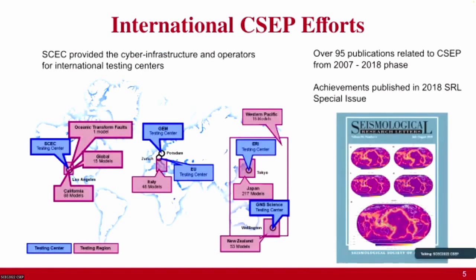After REALM, the project was a great success and it spurred a lot of international CSEP developments, starting from a single testing center in California. Towards the end of the first phase of CSEP, there were over 450 models installed in testing centers internationally, which is quite impressive, and they comprised a ton of different testing regions. These efforts resulted in almost 100 publications over the first decade of CSEP, and a lot of these achievements were outlined in the 2018 SRL special issue with summary papers by Daniel Schroelmer, Andy Michael, Max, and others.